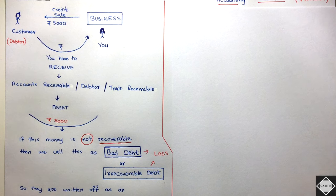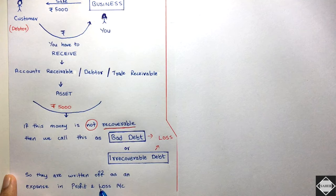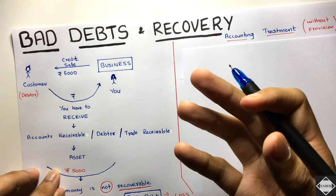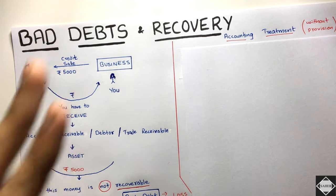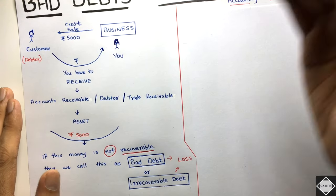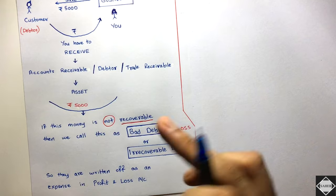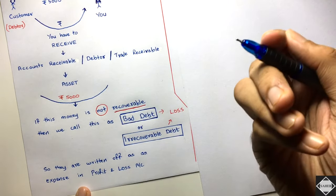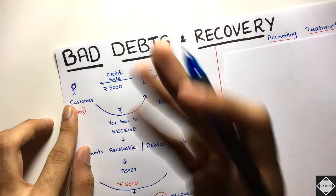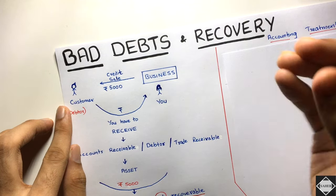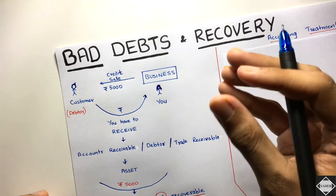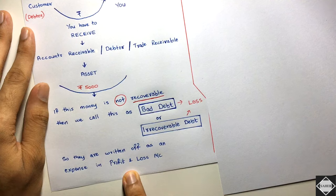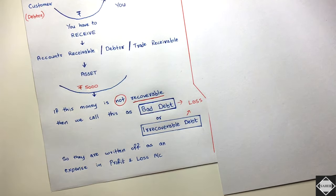In the accounting books, bad debts are written off as an expense in the profit and loss account. You had an asset of 5000 — that was your future economic benefit — but since the customer has gone bankrupt, you must cancel off that asset, reduce it, and charge bad debt as a loss to your profit and loss account. You have to reduce your profit by 5000 because you have incurred a loss.